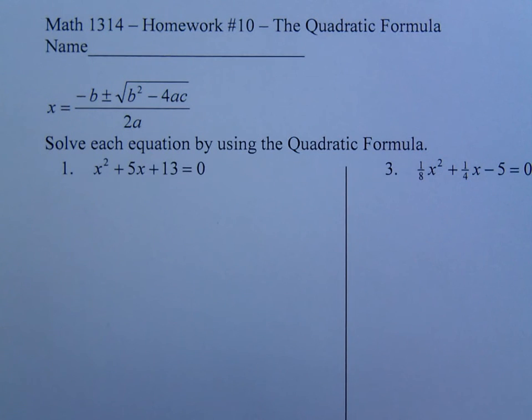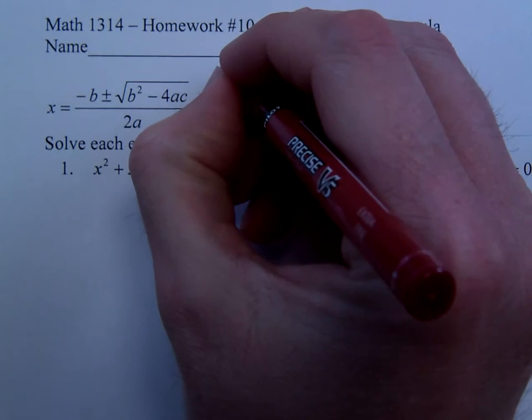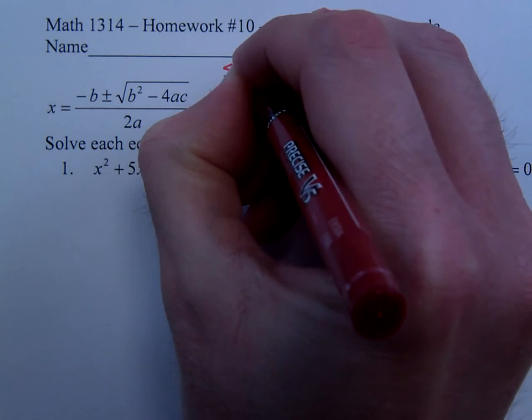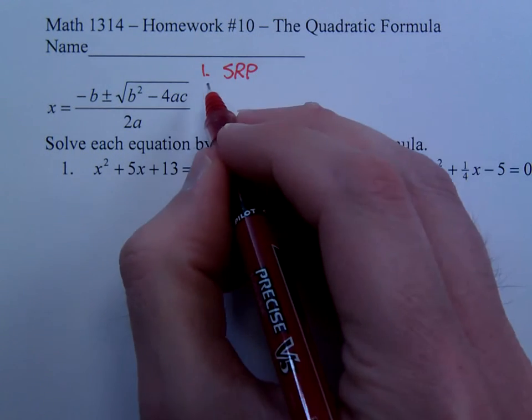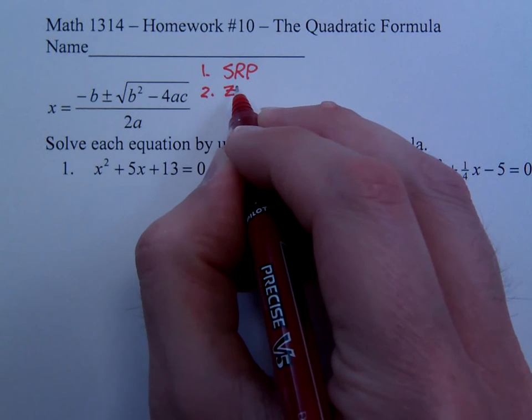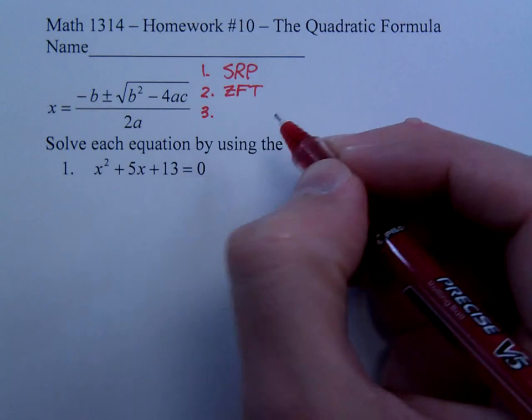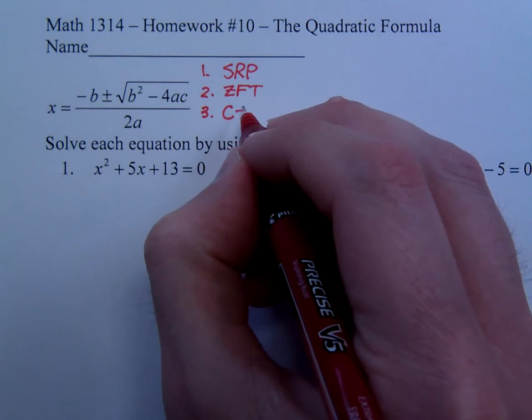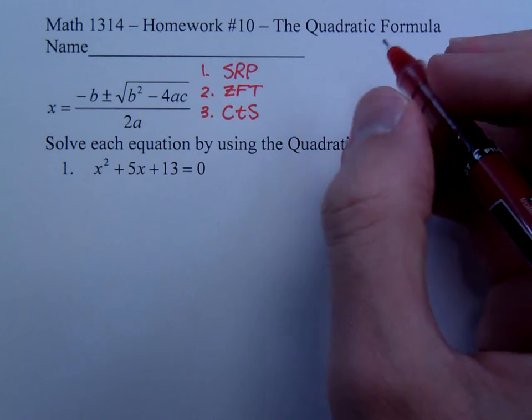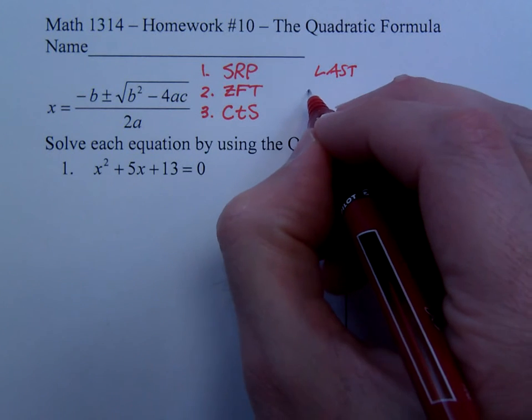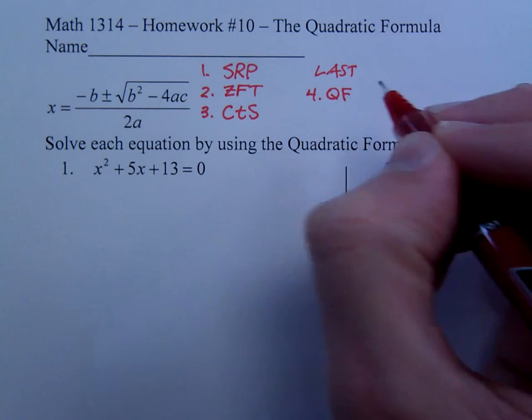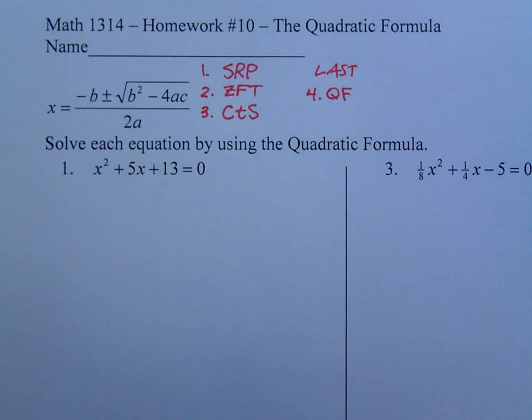For some reason, students think that the quadratic formula is, I believe the youngsters call it the bee's knees. It's okay. It is not my first choice. Typically, this is how I proceed. I first look to see, is the square root property something that I can use? If not, I look to see if I can use the zero factor theorem. If it doesn't factor, I will try to complete the square. As a method of last resort, I'll use the quadratic formula.